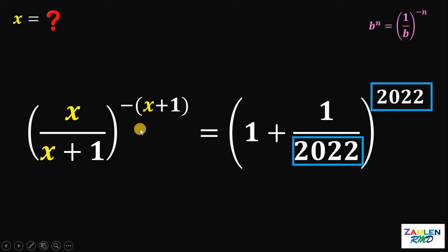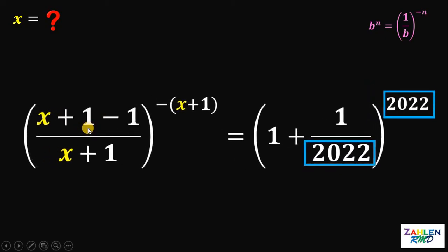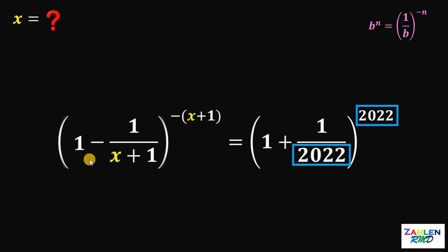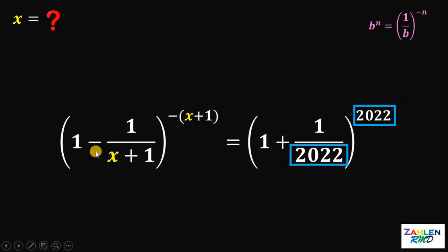At this point, what we're going to do is make a 1 appear in our expression. We need to add 1 and subtract 1 in the numerator, then separate x plus 1 and negative 1. So we have x plus 1 over x plus 1, minus 1 over x plus 1. We know x plus 1 over x plus 1 is just 1, so we now have 1 minus 1 over x plus 1, all raised to negative x plus 1.